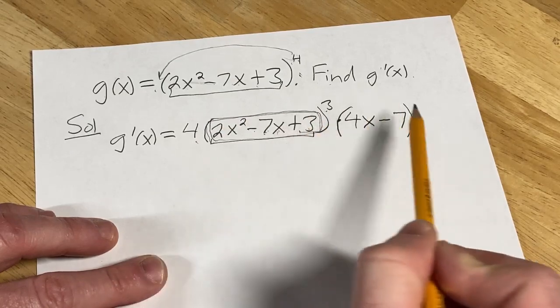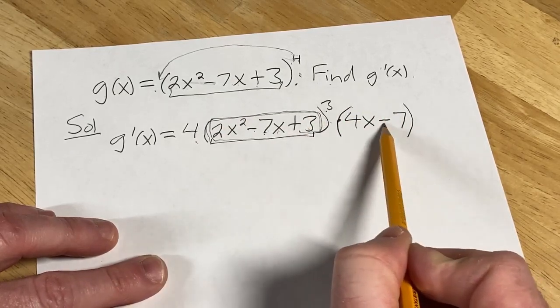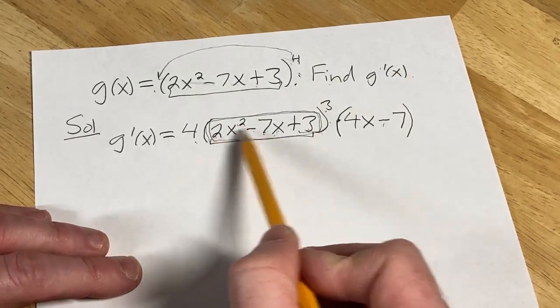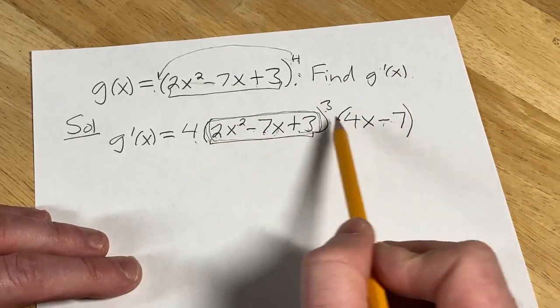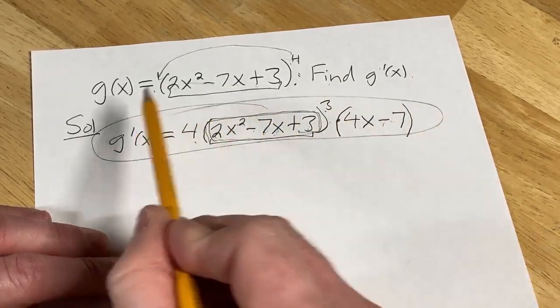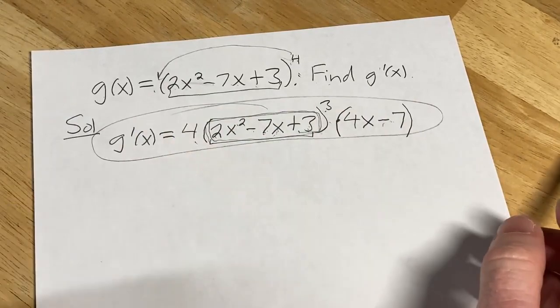Then times the derivative of the inside: here's the inside function, this derivative is 4x, this derivative is 7, the minus hangs out, the derivative of 3 is 0. So that's the final answer right there. I hope it's been helpful, keep doing mathematics!